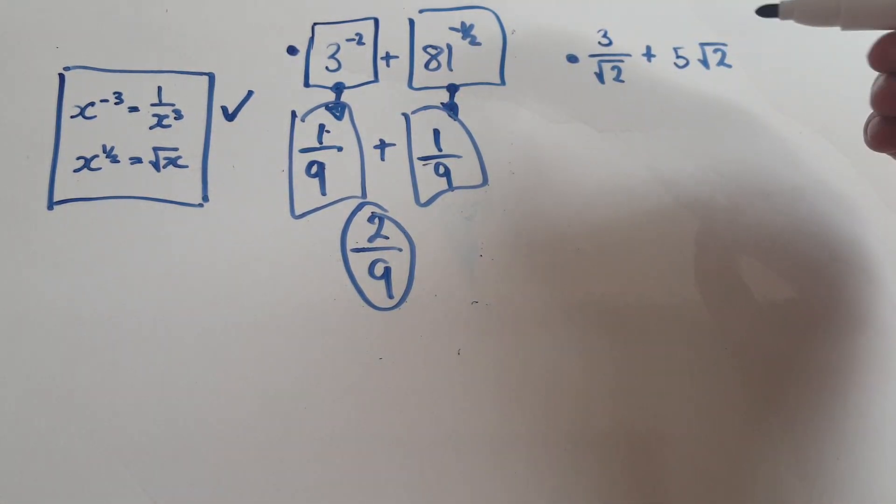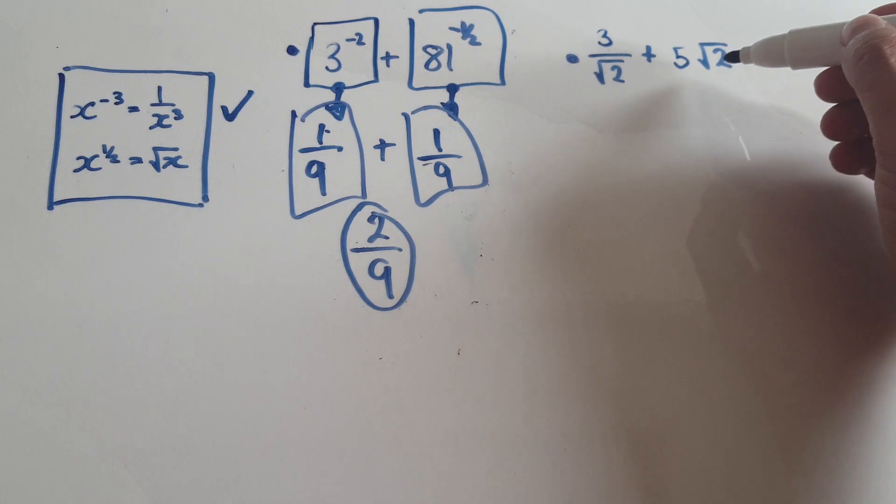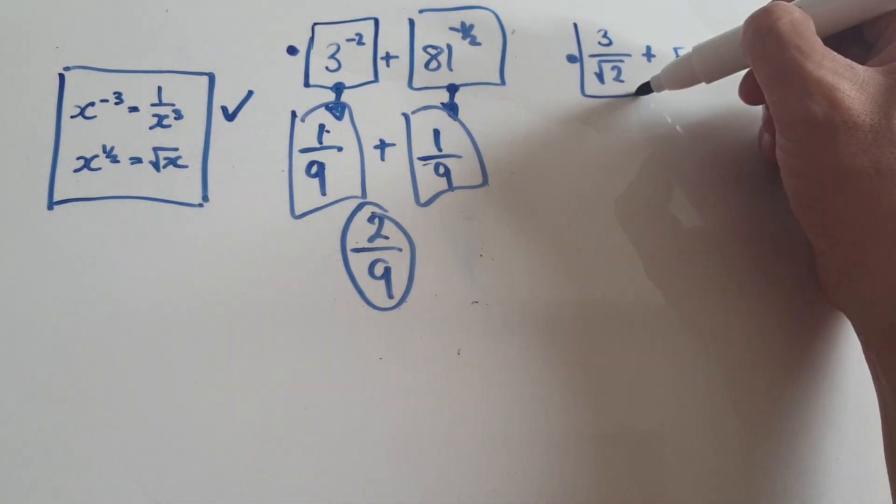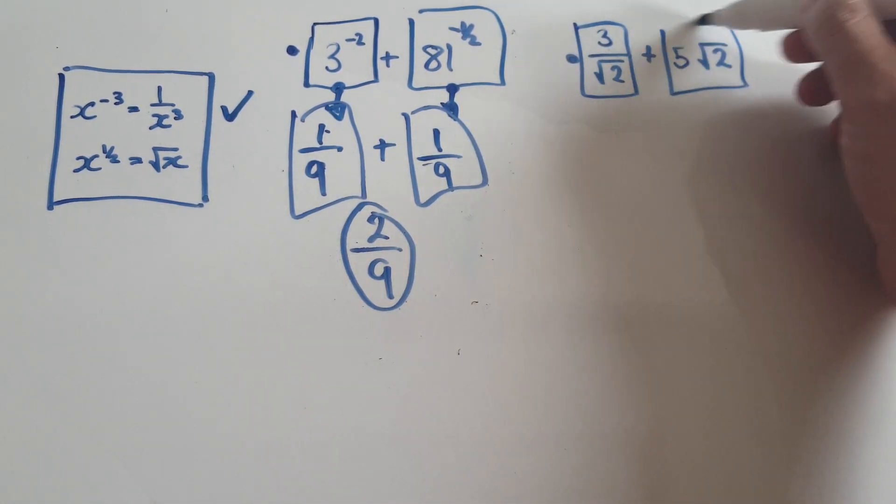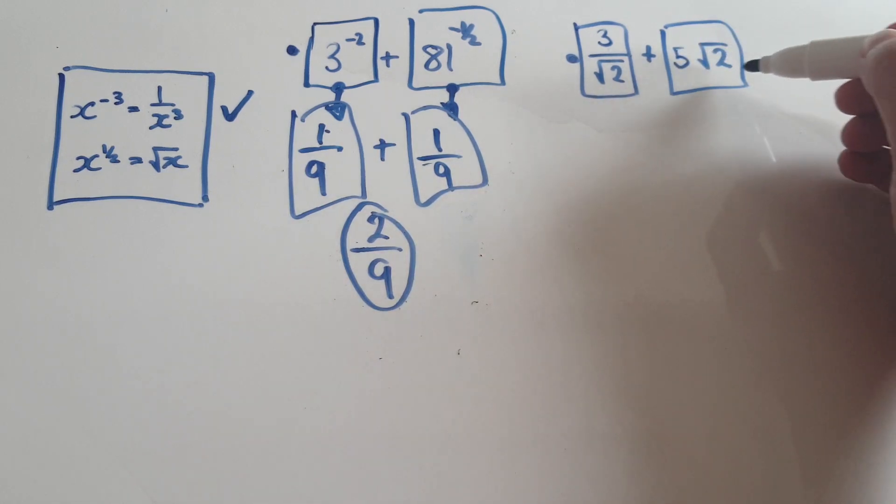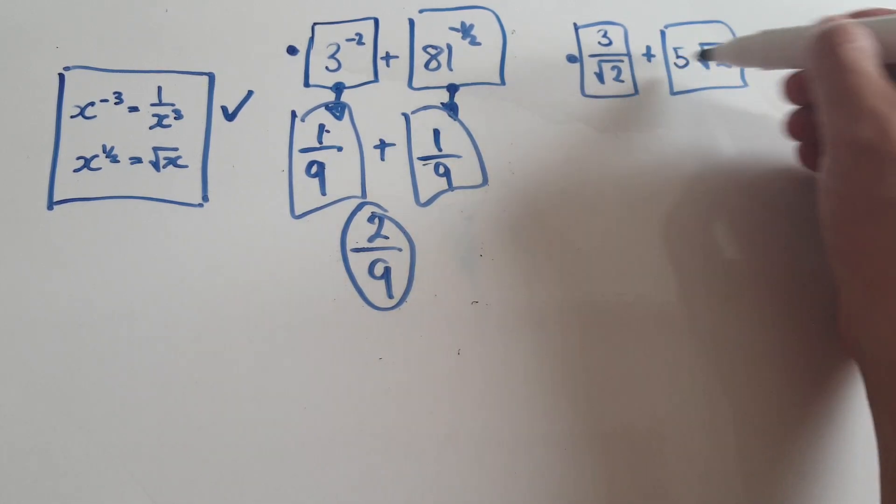Now for this one here, you've got one block plus another block. Whenever you're working with fractions, try to get the two denominators to be the same.